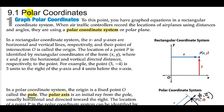This is section 9.1 on polar coordinates. To this point you have graphed equations in a rectangular coordinate system. When air traffic controllers record the locations of airplanes using distances and angles, they are using a polar coordinate system, or a polar plane.